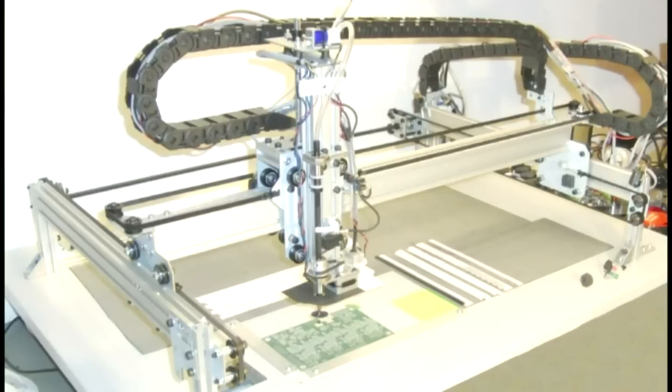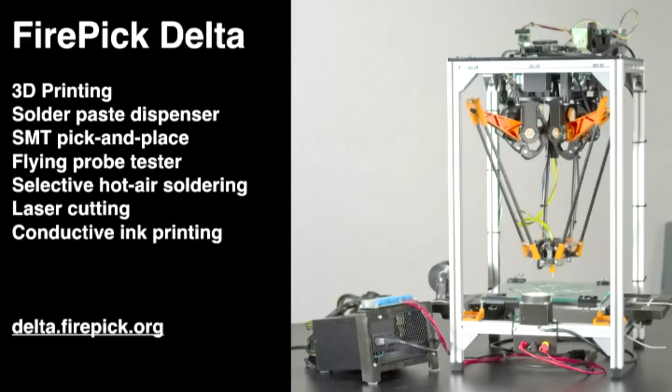So I started looking around a bit more and I found a few other projects. There's the Firepik Delta, which is a machine that's trying to be everything. It wants to be a flying probe tester and a laser cutter and print conductive ink and solder paste dispenser and a 3D printer and everything else. It's designed to have heads that can be removed and then you can put a different head on it for a different purpose.